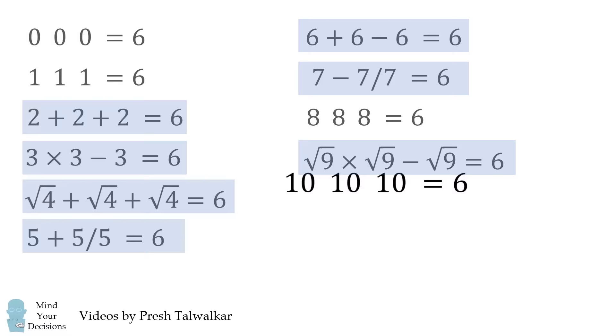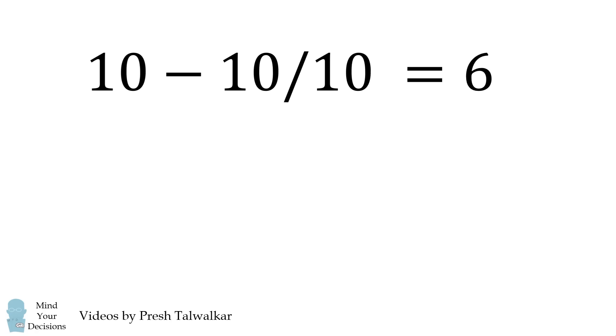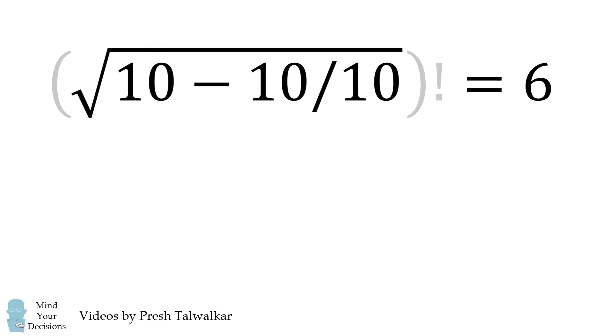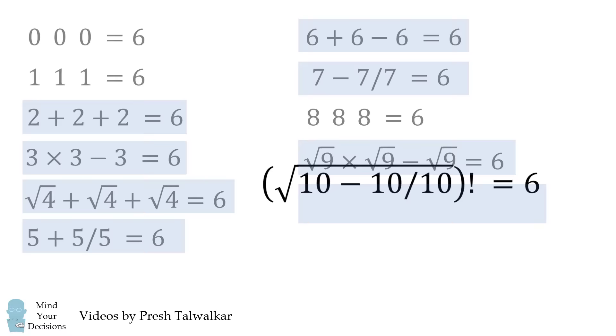Now, let's solve 10 10 10 is equal to 6. Let's do this in steps. We'll do 10 minus 10 over 10. And at this point, our result is equal to 9. We'll now take the square root of this to get to a result of 3. Then, we will take the factorial. So, that's how we can get 10 10 10 to equal 6.